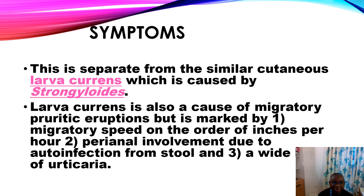This is separate from the similar cutaneous larva currens, which is caused by Strongyloides. Larva currens is also a cause of migratory pruritic eruptions but is marked by: one, migratory speed on the order of inches per hour; two, perianal involvement due to auto-infection from stool; and three, a wide area of urticaria.